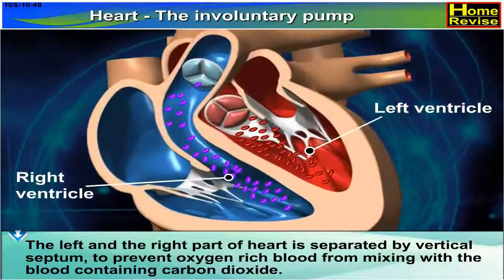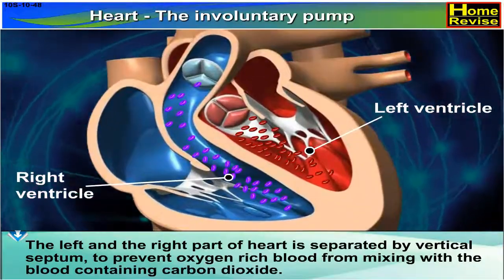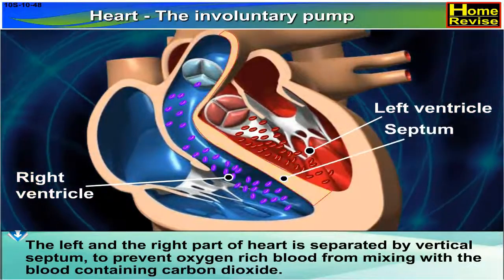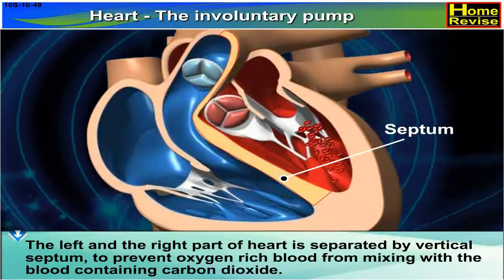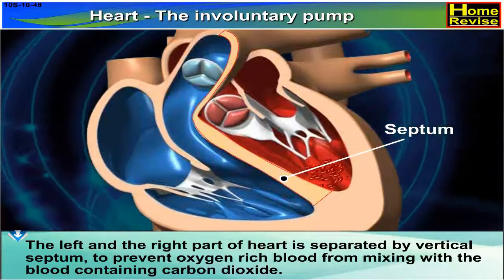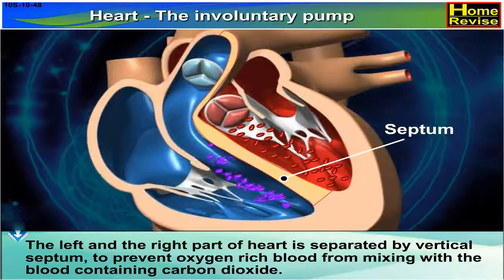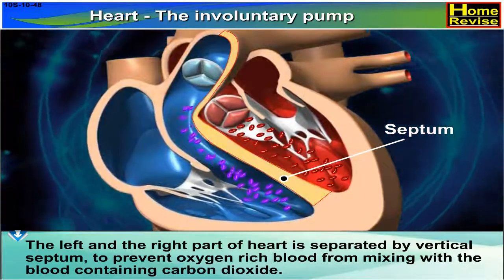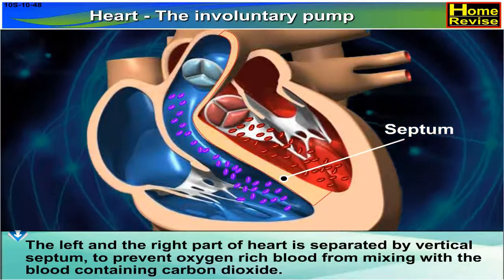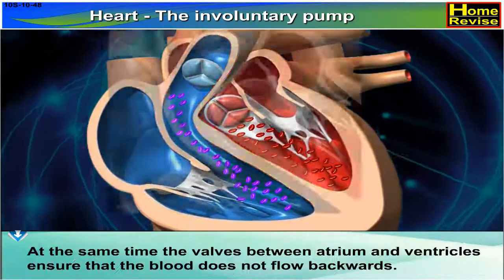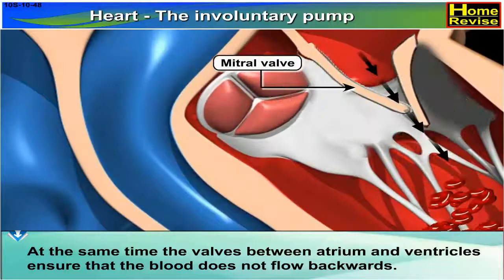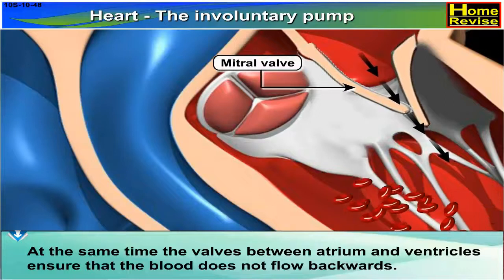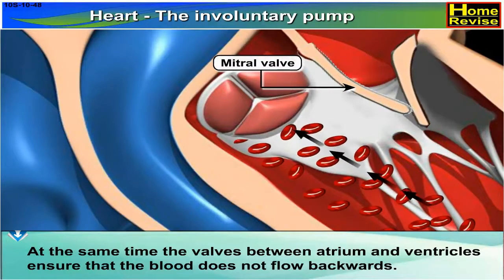The left and the right part of the heart is separated by a vertical septum to prevent oxygen-rich blood from mixing with the blood containing carbon dioxide. At the same time, the valves between atrium and ventricles ensure that the blood does not flow backwards.